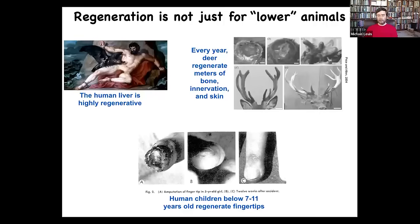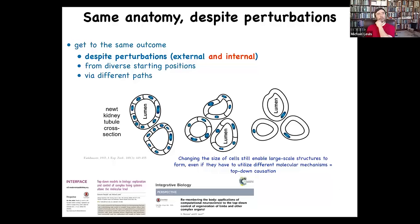This isn't just for worms and amphibians — humans can do this somewhat, and mammals can do it too. We regenerate our livers, human children regenerate their fingertips, and antlers in deer — a large adult mammal — grow back every year at a rate of a centimeter and a half of new bone. This kind of ability is not something that mammals couldn't do. There's actually an even more interesting example — not just about external perturbation and the ability of regulative morphogenesis to overcome injury.